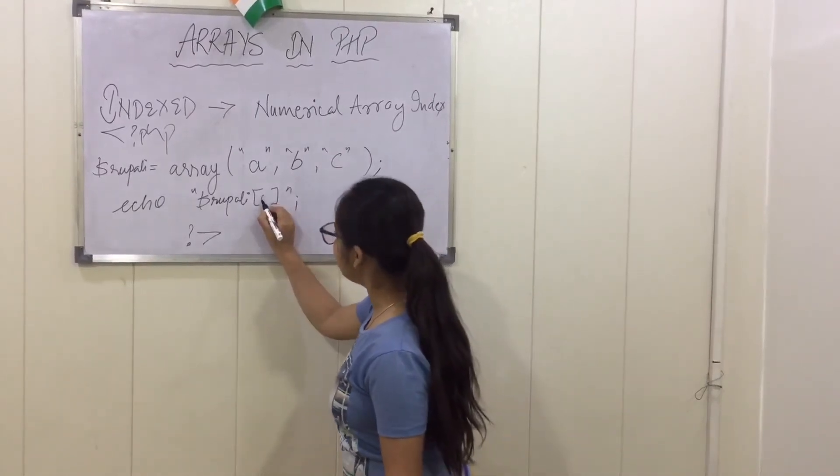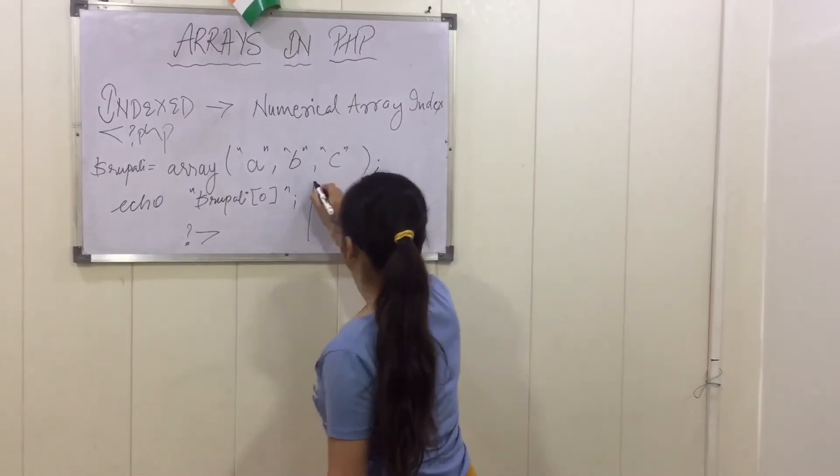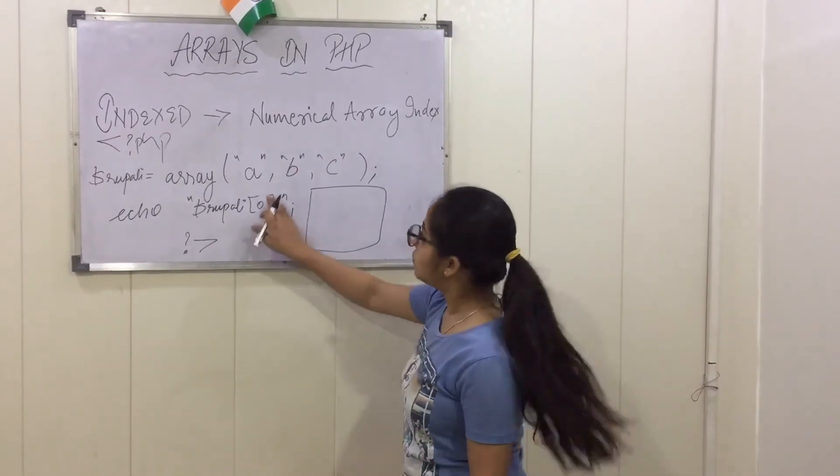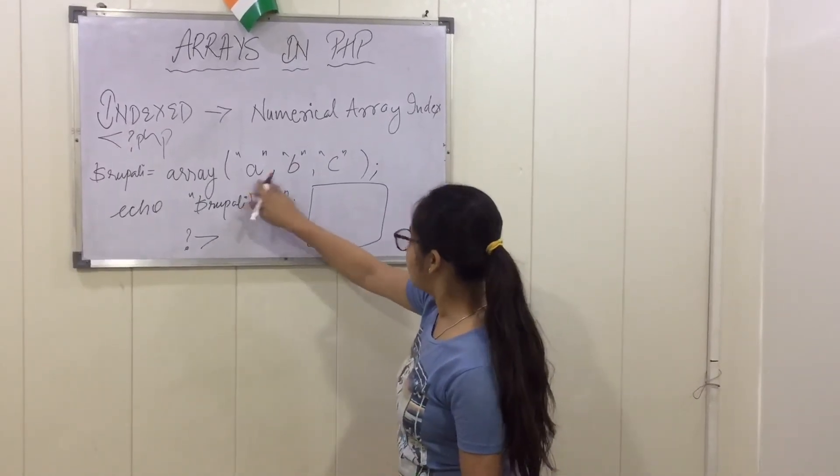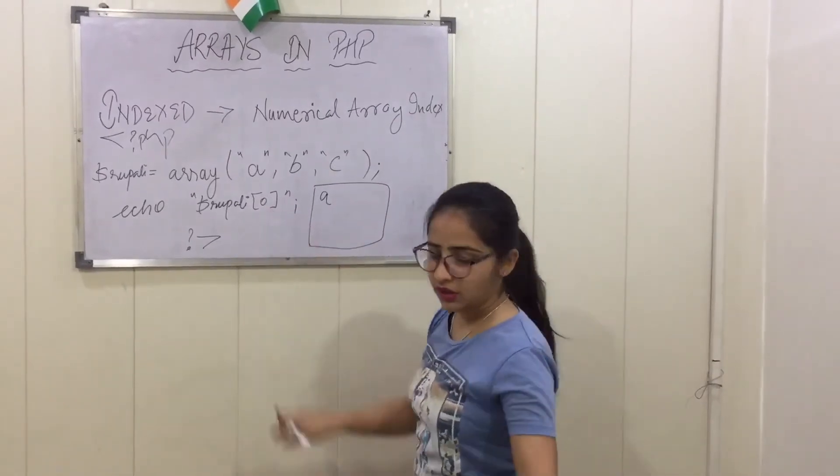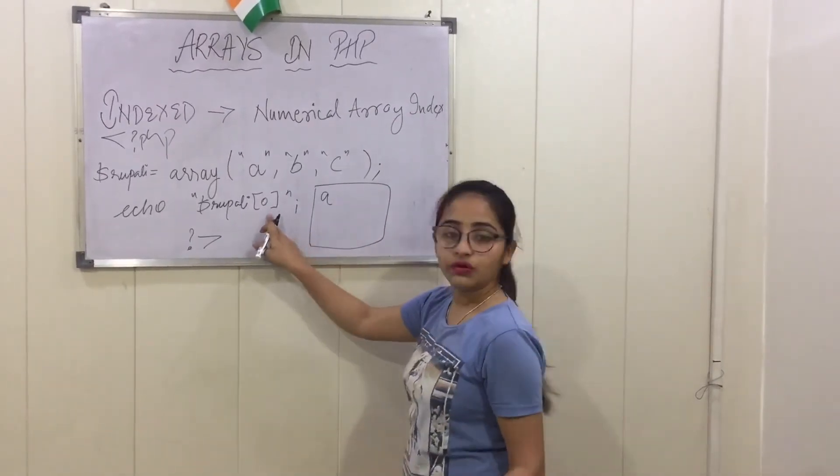Suppose if I am giving 0 here. Suppose this is my display screen. If I have put 0 here, so the first value will be conducted, and it will be printed as A because of 0. Because the array starts from 0 not from 1.